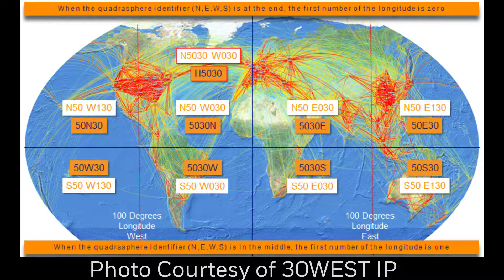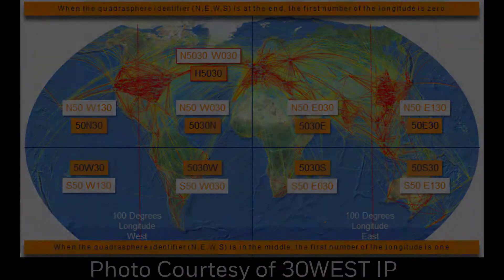A couple points worth mentioning: the FMS is not converting the shorthand to a lat long — it's just a defined waypoint like any other that would normally be entered in the flight plan. Also, to save space, not all oceanic waypoints are in the navigation database. So if the FMS doesn't recognize the shorthand entry, the crew will have to enter it manually as described earlier.